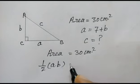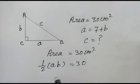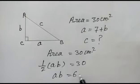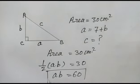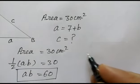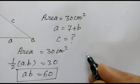This equals 30, so ab will be equal to 60. As we know from Pythagoras theorem, a square plus b square is equal to c square.